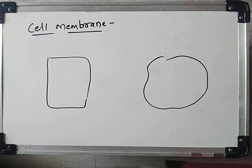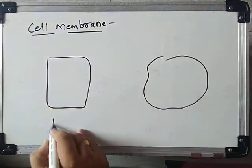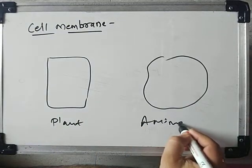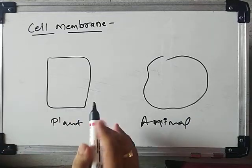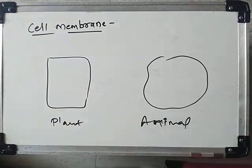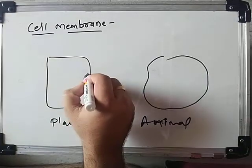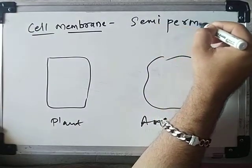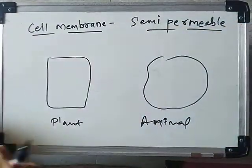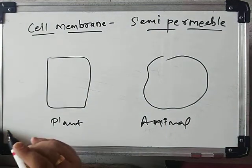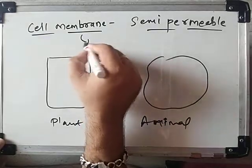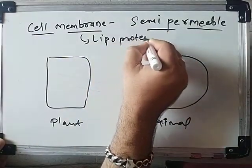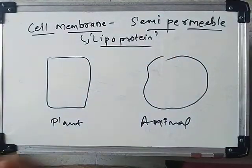The first part we focus on is the cell membrane, available both in plant and animal cells. The cell membrane is the major part having very minute pores, which allow only selected particles to move inside or outside the cell. Because it allows specific particles only, the cell membrane is called a semi-permeable membrane. The cell membrane is actually made up of lipoprotein.